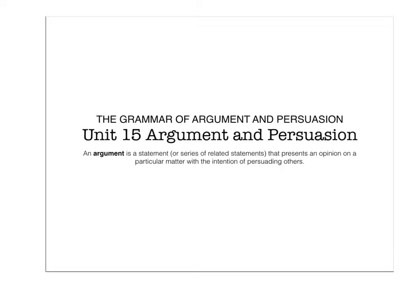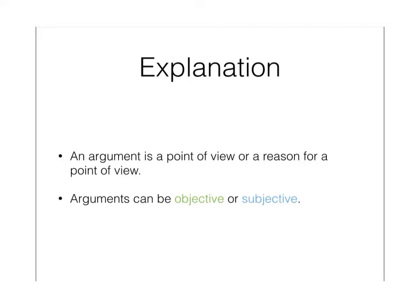The Grammar of Argument and Persuasion, Unit 15: Argument and Persuasion. An argument is a statement or series of related statements that presents an opinion on a particular matter with the intention of persuading others. An argument is a point of view or a reason for a point of view.